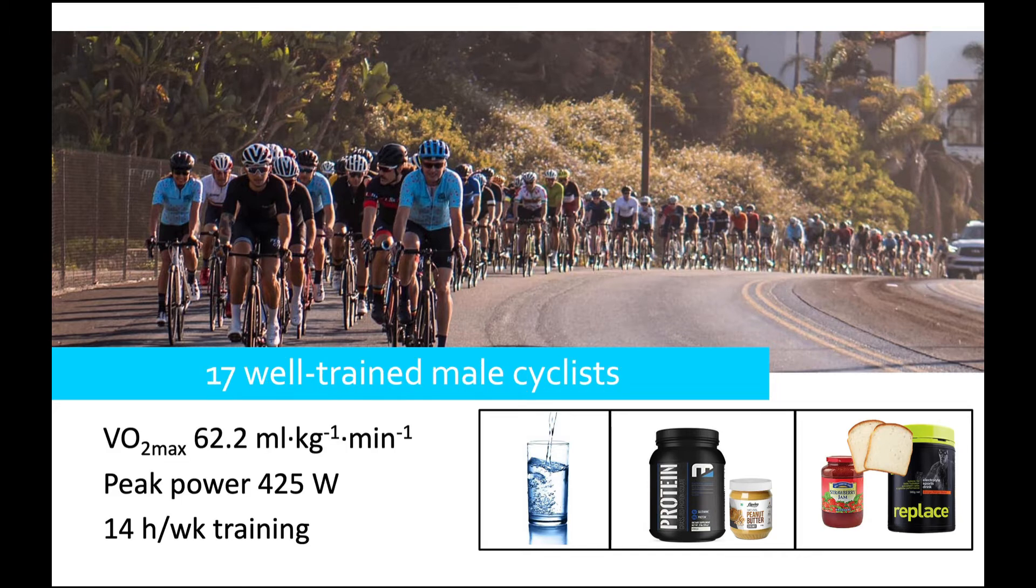In this study we have 17 well-trained male cyclists. If you're familiar with these numbers, it's a really solid group of cyclists. VO2 max is 62 and peak power is quite high. These people are not pros but certainly training on average 14 hours a week, so they're quite well trained.